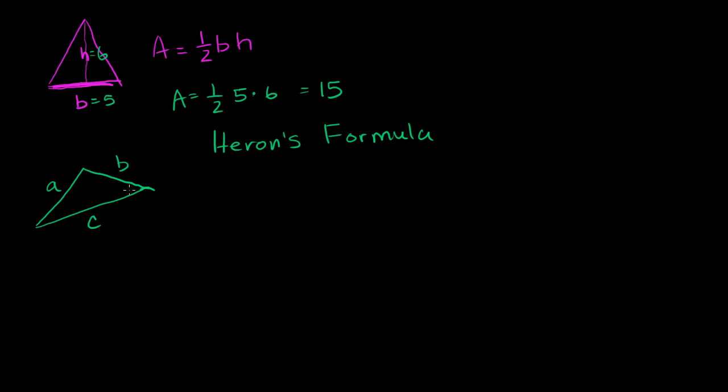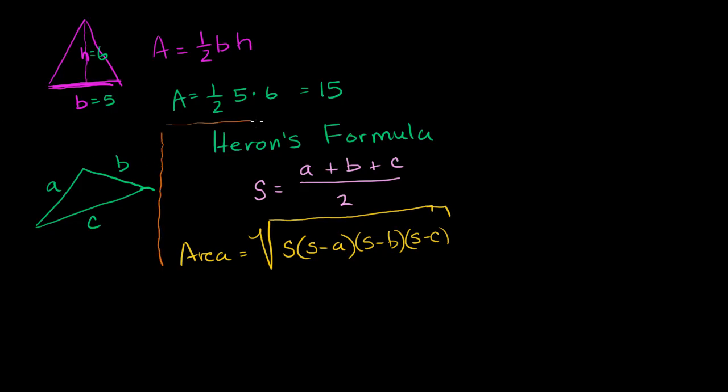So Heron's formula says, first figure out this third variable s, which is essentially the perimeter of this triangle divided by 2: a plus b plus c divided by 2. Then once you figure out s, the area of your triangle is going to be equal to the square root of s times (s minus a) times (s minus b) times (s minus c). That's Heron's formula right there.